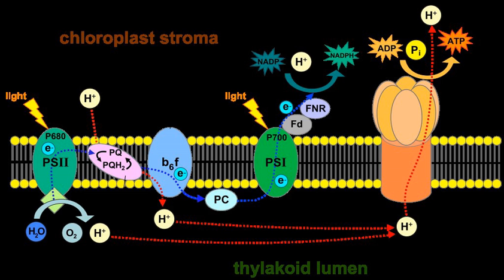The thylakoid membrane contains some integral membrane protein complexes that catalyze the light reactions. There are four major protein complexes in the thylakoid membrane: photosystem II (PSII), cytochrome B6F complex, photosystem I (PSI), and ATP synthase.